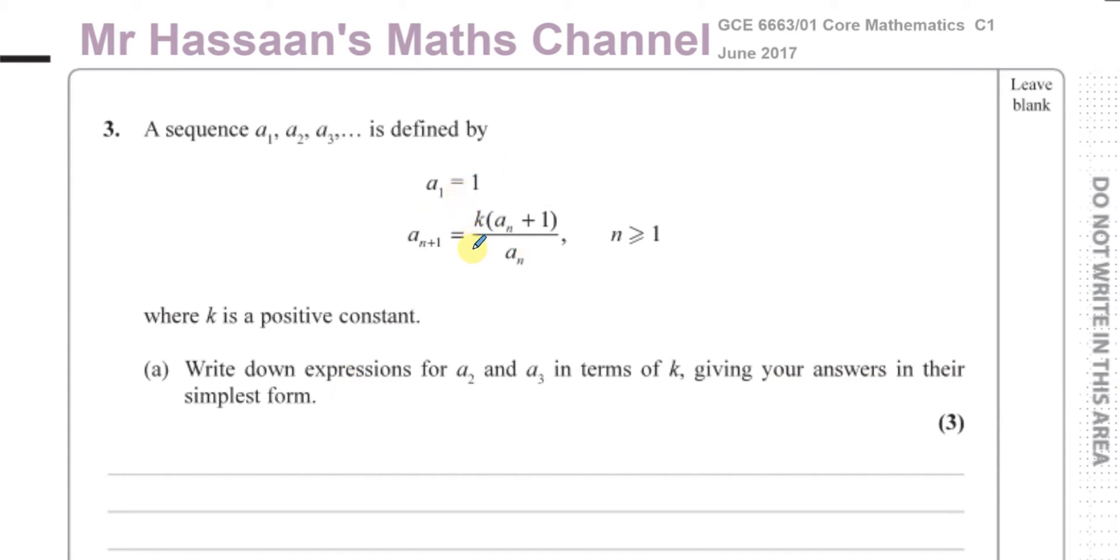To continue the sequence you have to put in the values of the previous term. Here basically what this means is to get to the next term you have to multiply k with the previous term plus one and divide by the previous term.